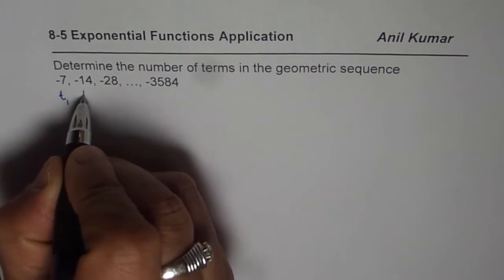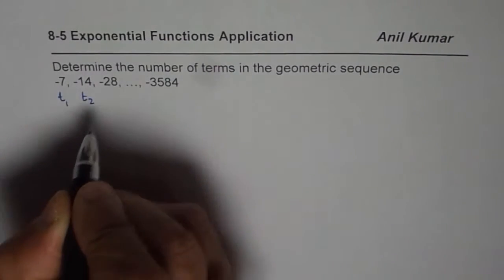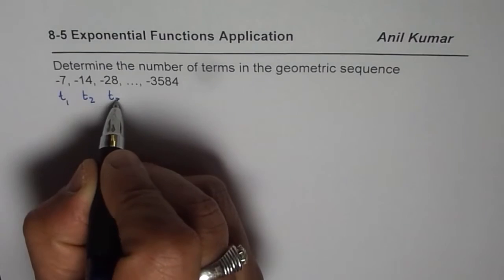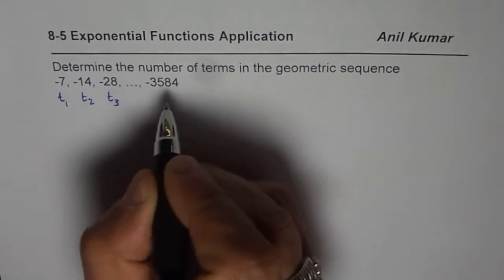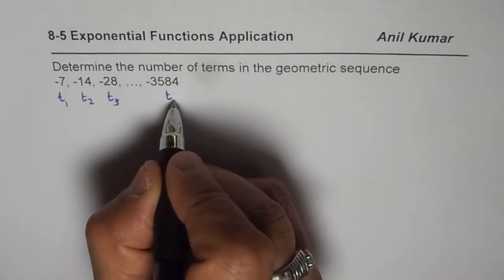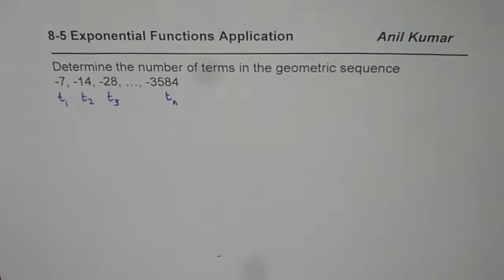Like t1 is minus 7, t2 is minus 14, t3 is minus 28, and we don't know what this number is, so we'll write tn for minus 3584. So that is the starting point, you really don't need any formulas.